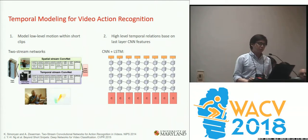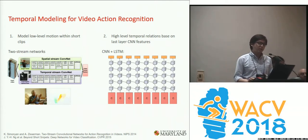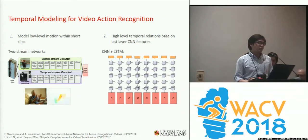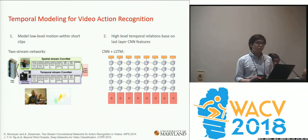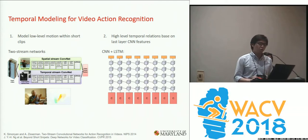Another direction is to model the high-level temporal relations, usually based on the last layer of CNN features. One example would be using an LSTM on top of CNN to learn higher-level temporal relations. These works usually take video spans of more than one minute.